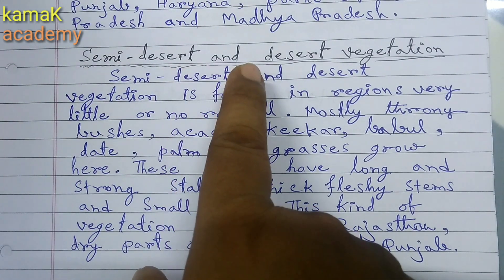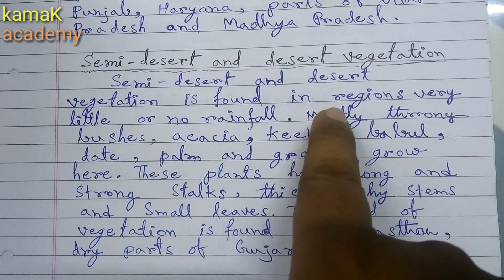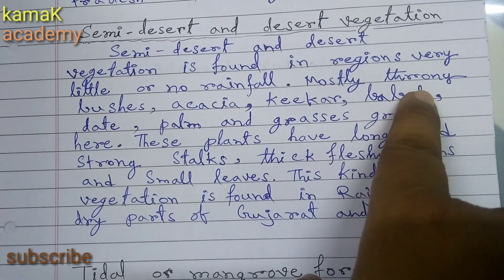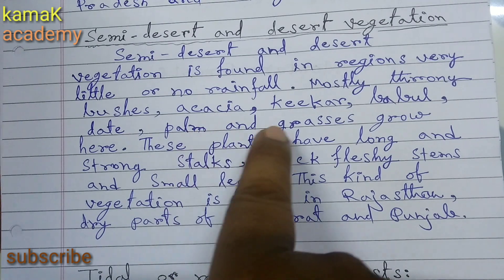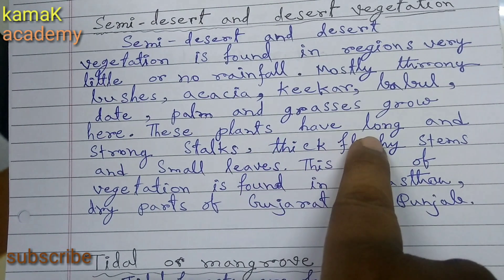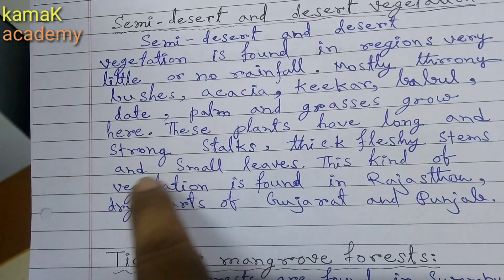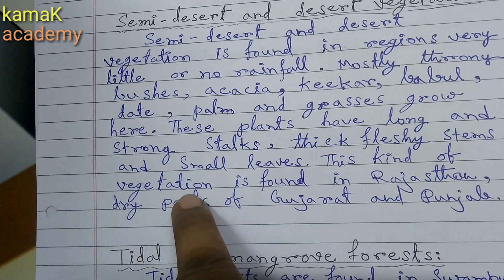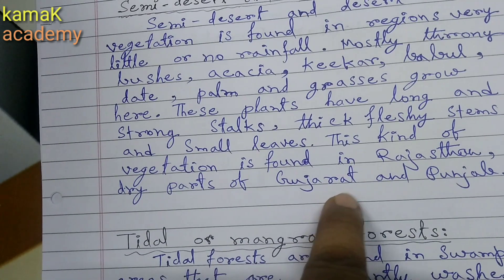Next point: Semi Desert and Desert Vegetation. Semi desert and desert vegetation is found in regions with very little or no rainfall. Most thorny bushes, acacia, khejri, babul, date palm and grasses grow here. These plants have long and strong stalks, thick fleshy stems and small leaves. This kind of vegetation is found in Rajasthan and dry parts of Gujarat and Punjab.